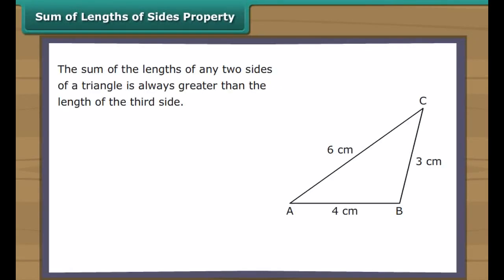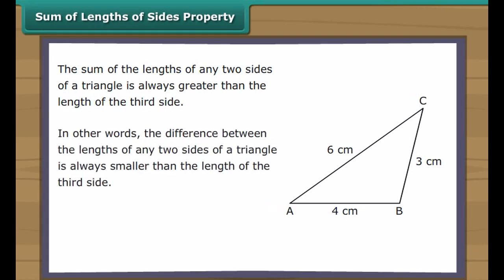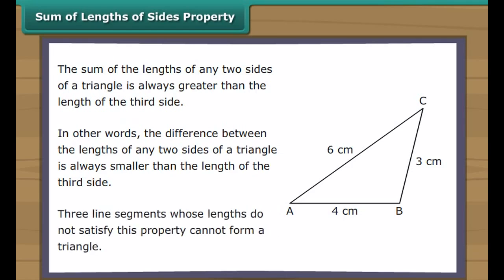Sum of lengths of sides property: the sum of the lengths of any two sides of a triangle is always greater than the length of the third side. In other words, the difference between the lengths of any two sides of a triangle is always smaller than the length of the third side. Three line segments whose lengths do not satisfy this property cannot form a triangle.